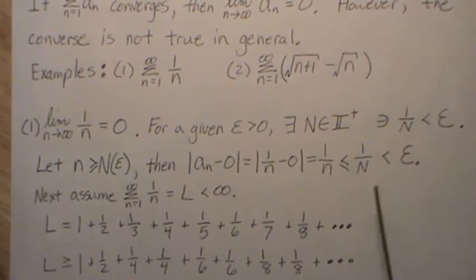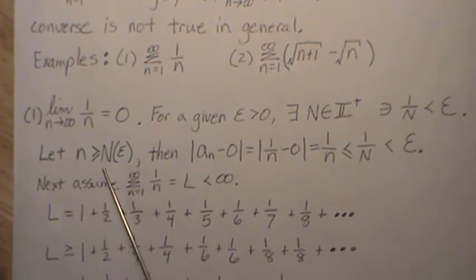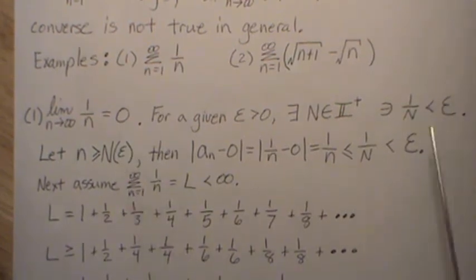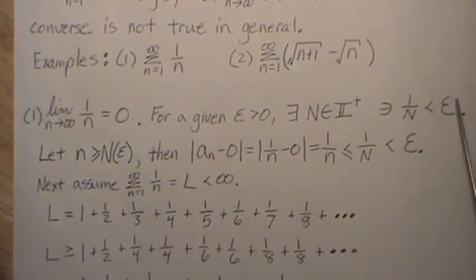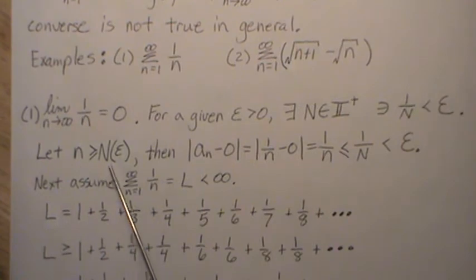We can find an integer large enough that this is less than that. Now let little n be bigger than big N. I put that big N is really a function of epsilon, right? It depends how small or how big, you know, what size this is to how big of an N we need. So that's why capital N is a function of epsilon.